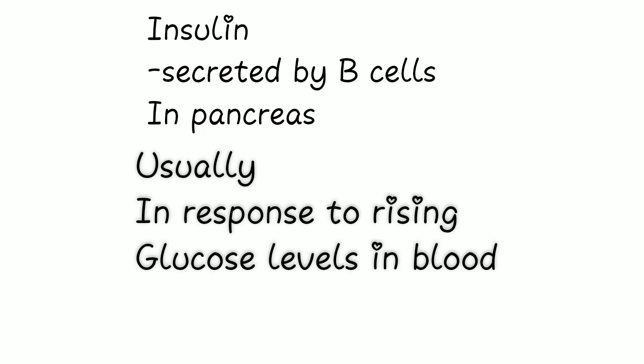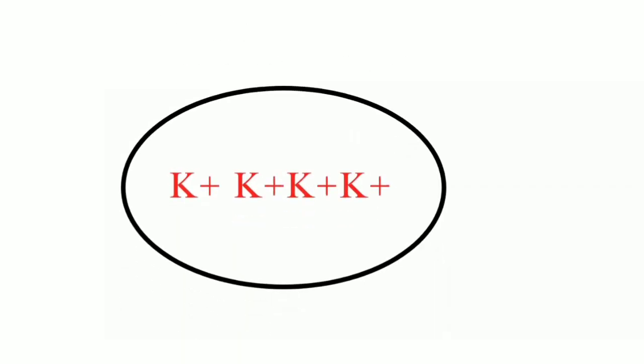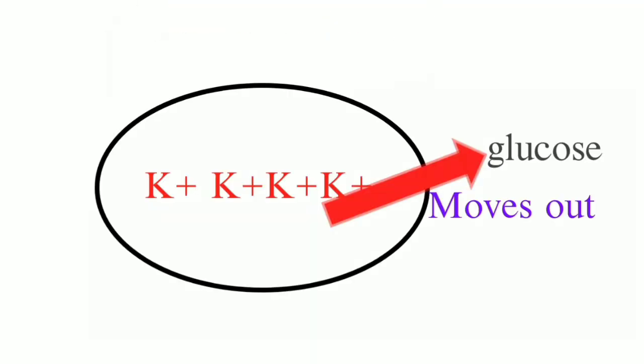Potassium likes to hang out inside of the cell, but when glucose levels rise, it moves out of the cell, causing a rise in potassium ions in blood. Potassium ions tend to move to where we have more glucose, so when blood glucose levels increase, potassium ions exit the cell and move into the blood.